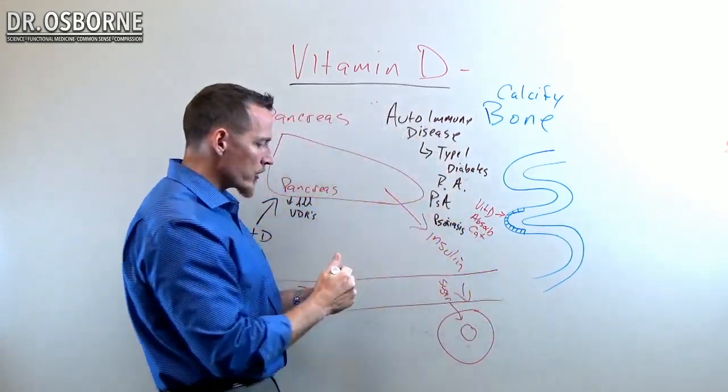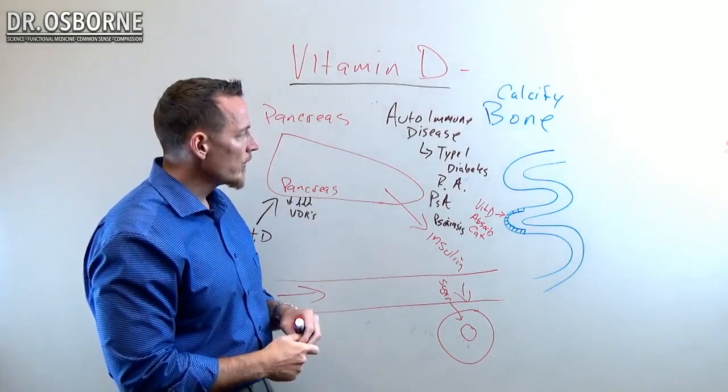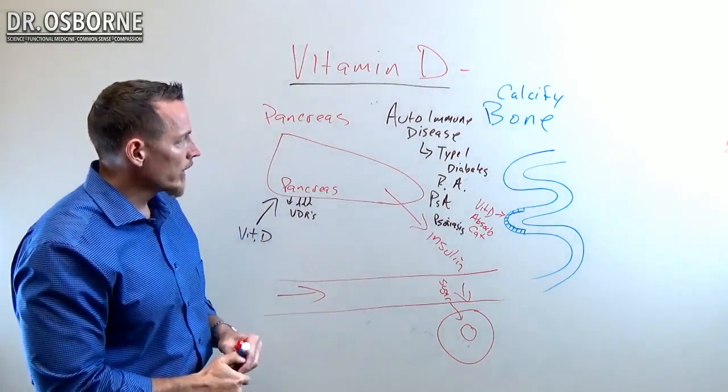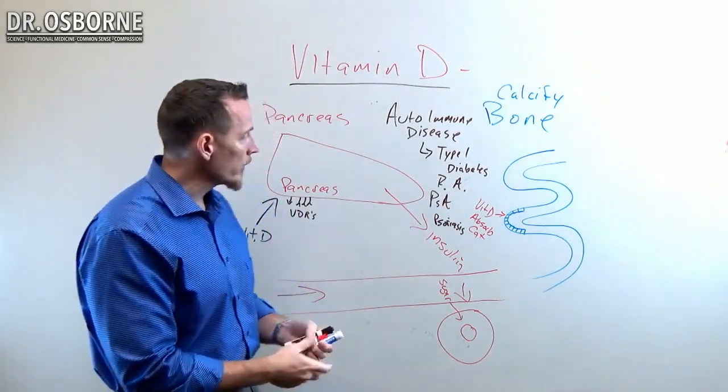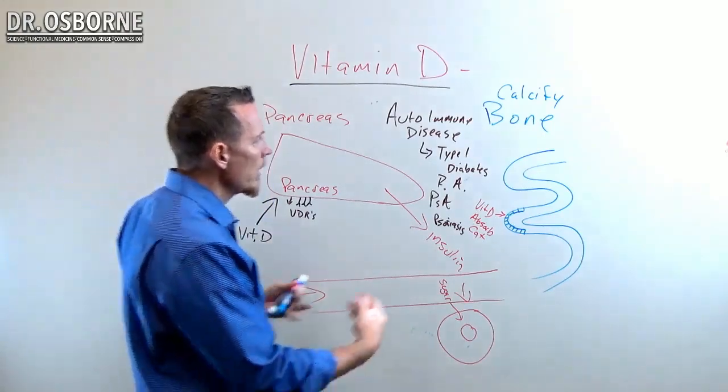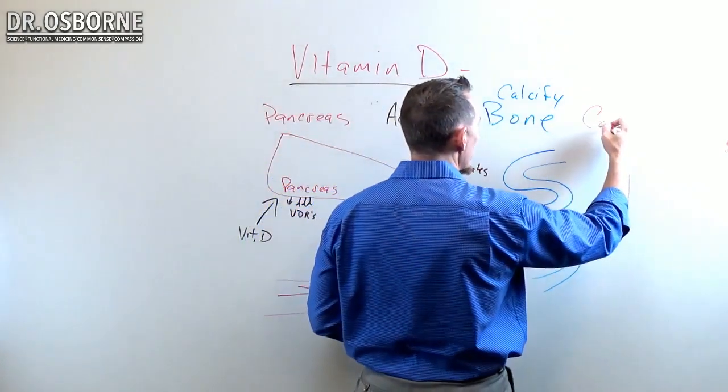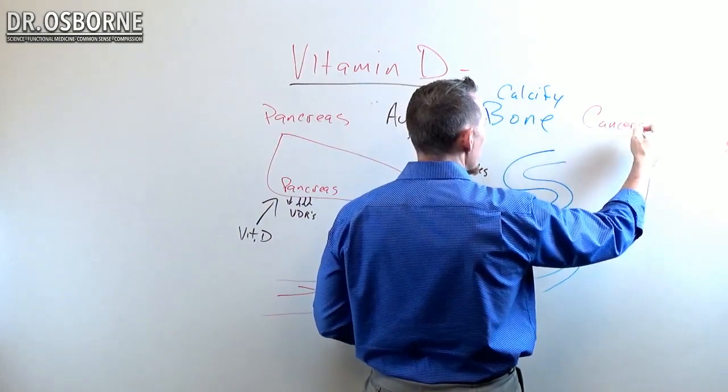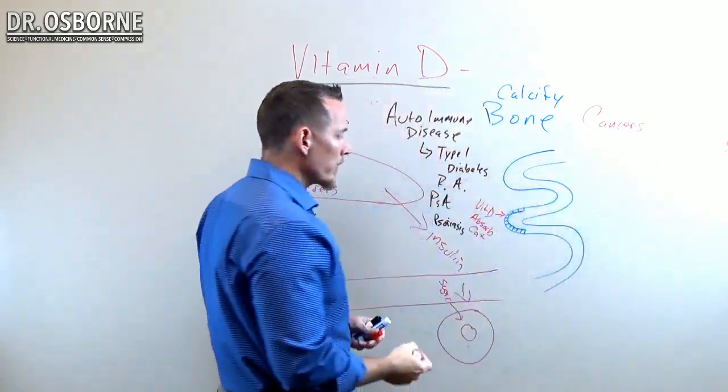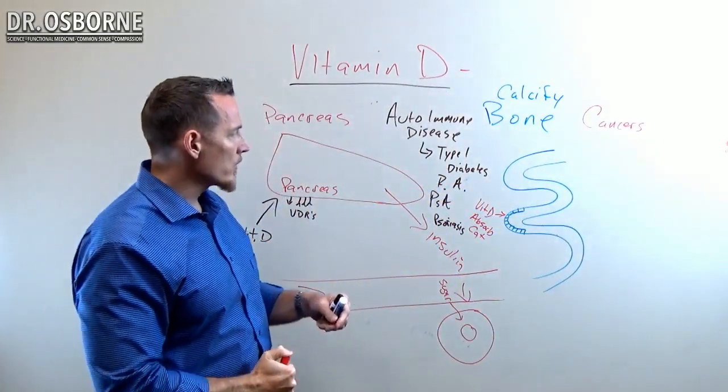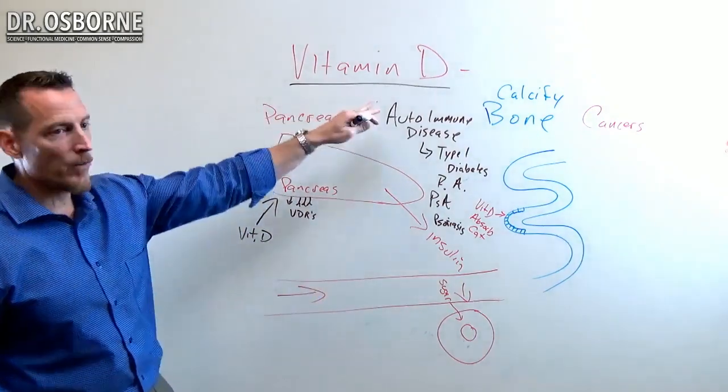This is just a short list, not the comprehensive all-in be-all end-all list, but a short list of different select autoimmune diseases that have been really well studied. Then we have cancer. Vitamin D deficiency has been linked to 19 different forms of terminal types of cancer. We don't want to play around with vitamin D.